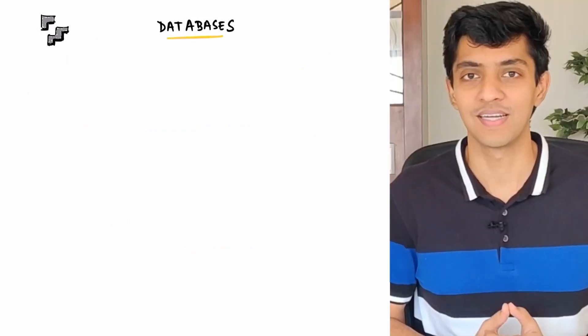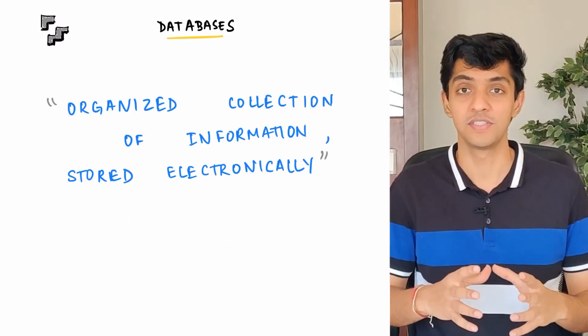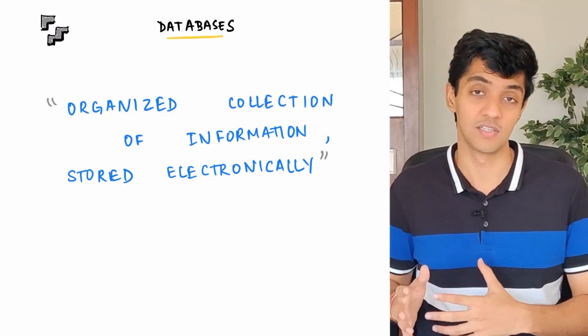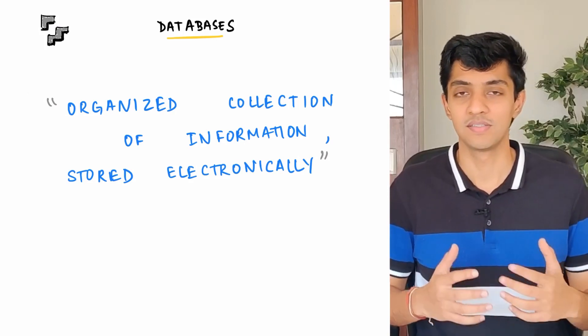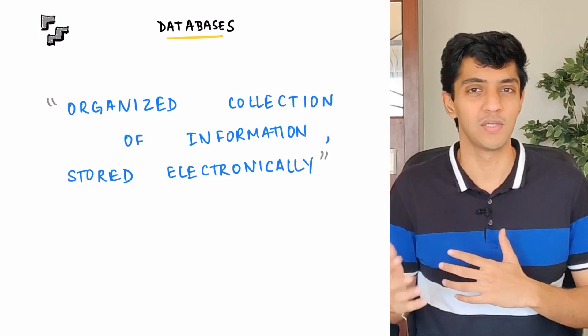So jumping in, what exactly is a database? In a very simple sense, a database is an organized collection of information that is stored electronically. Now this information could be structured or it could be unstructured. By structured, what I mean is that the information is arranged in the form of a table, in the form of rows and columns like you'd see in an excel sheet.